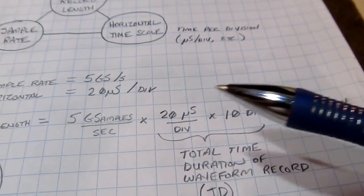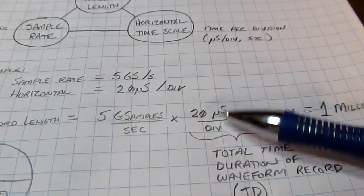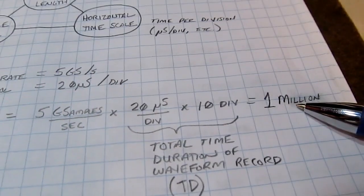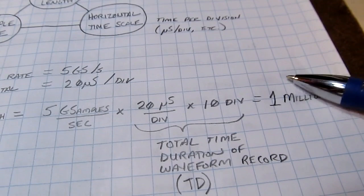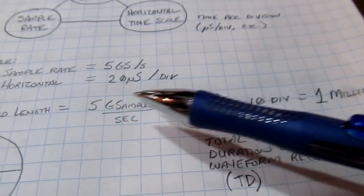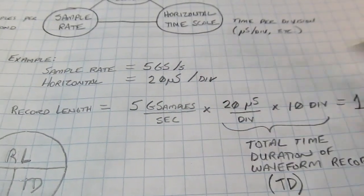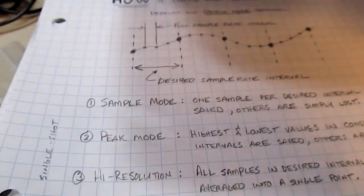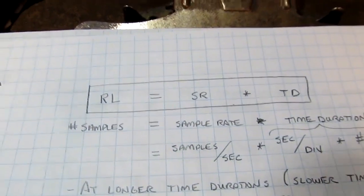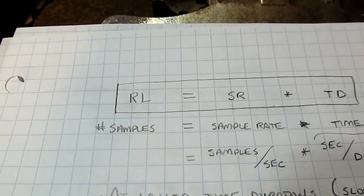You can see that if you adjust the time per division up or down, the amount of memory required will be different. If you adjust the amount of memory, you'll have to adjust one of the other two parameters. It's simply that relationship: record length equals sample rate times time duration.